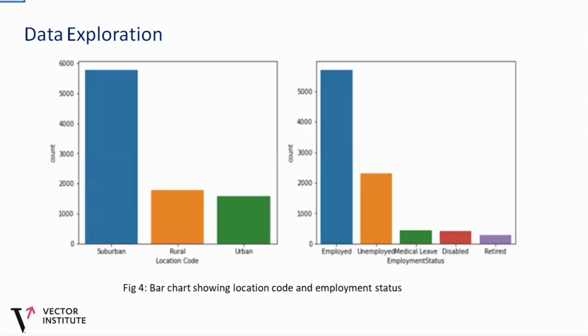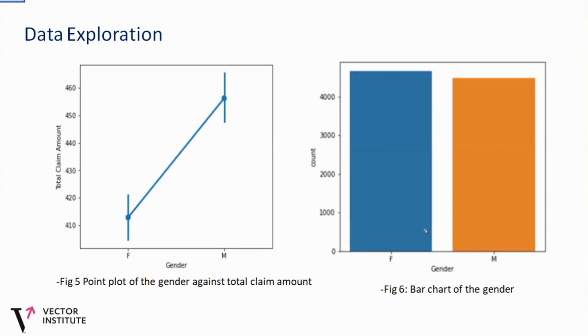And we went further to visualize our independent variables using the bar charts. And of course, from the location code feature, we can see that this sub-urban location tends to be highly occupied by the people as compared to others. For the employment status, we can see that a lot of people are actually employed in this particular data set. We also went further to check the gender. And we can see the population of the female and the male tends to be almost equal. However, we got something striking in Fig 5 here. Here we use the points plots to check the relationship between the gender and our dependent variable total claim amount. We discovered that the male population here actually spent more on the total claim amount as compared to the female, probably because the male gender tends to be more employed compared to that of the female.